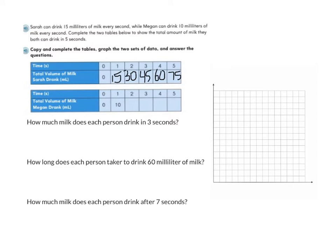For Megan, after one second she drank 10 mL, after two seconds 20 mL, after three seconds 30 mL, after four seconds 40 mL, and after five seconds 50 mL. We can then graph both data tables. Time is equal to our X coordinate and total volume is equal to our Y coordinate for both tables.